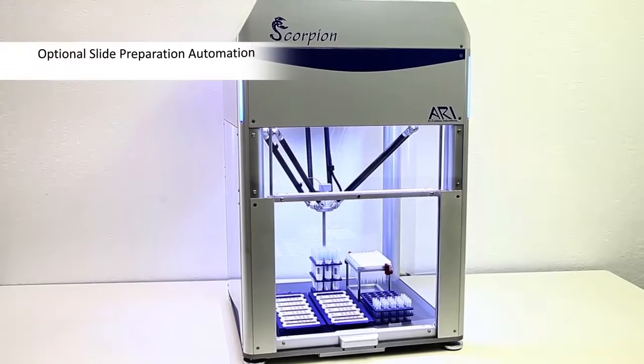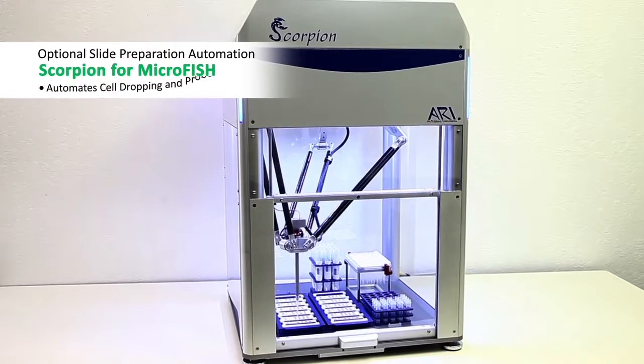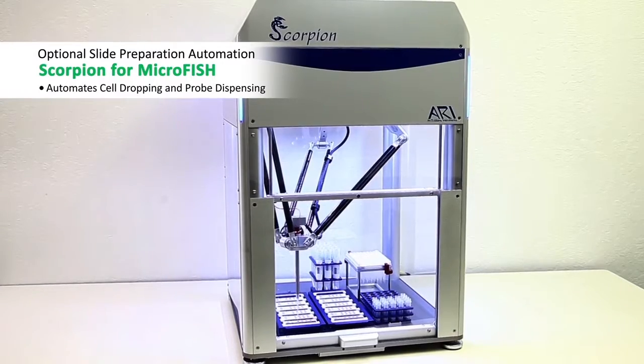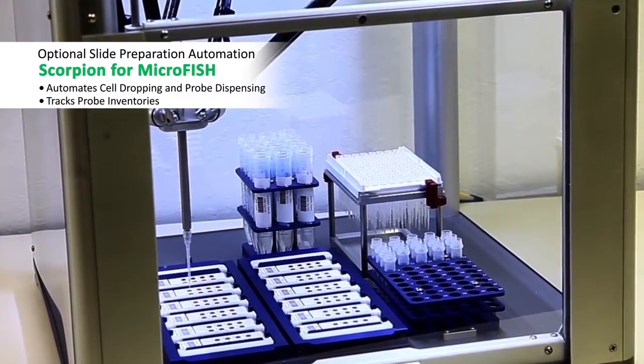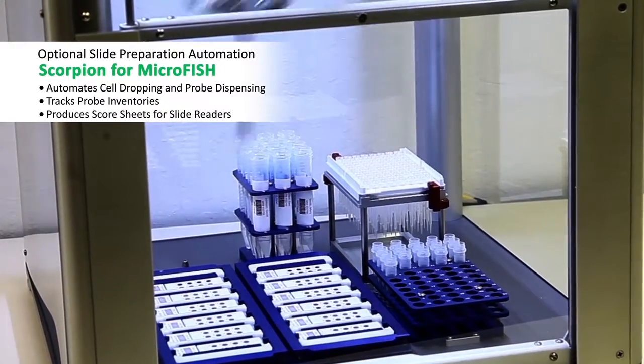With the optional Scorpion for Microfish, you can also automate the repetitive pipetting steps for cell dropping and probe dispensing. In addition, the Scorpion tracks probe inventories and produces score sheets for the slide reader.